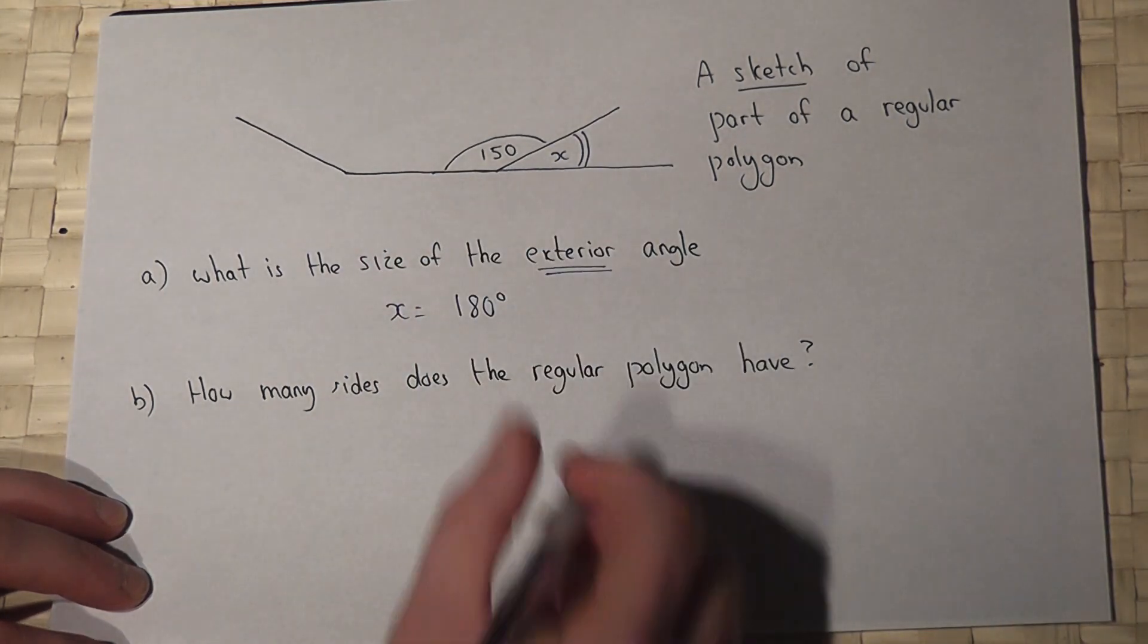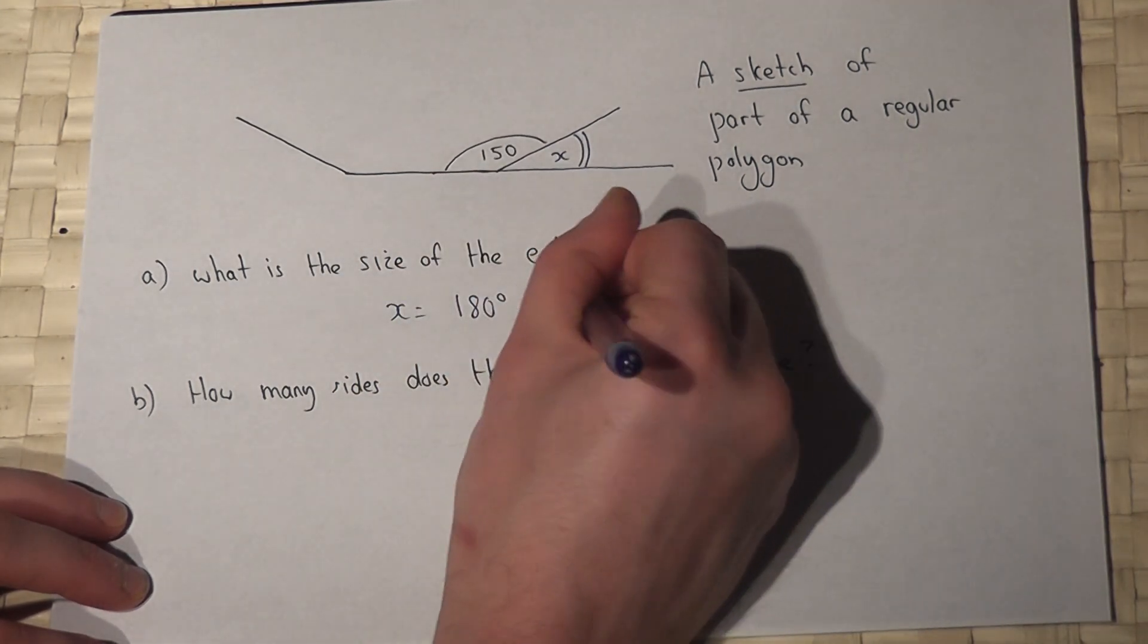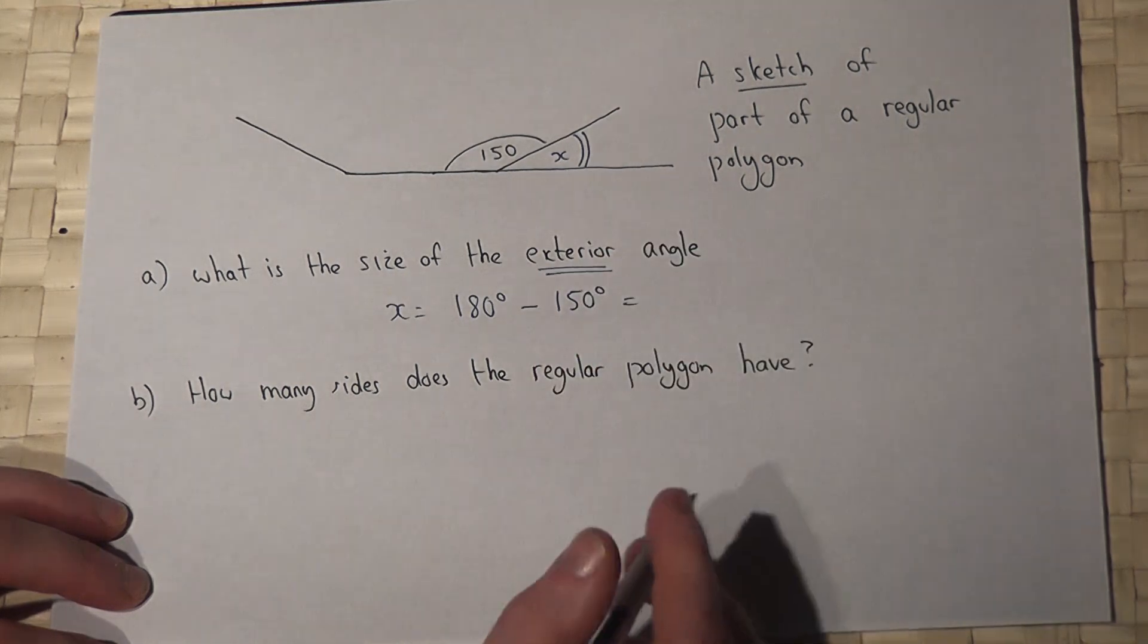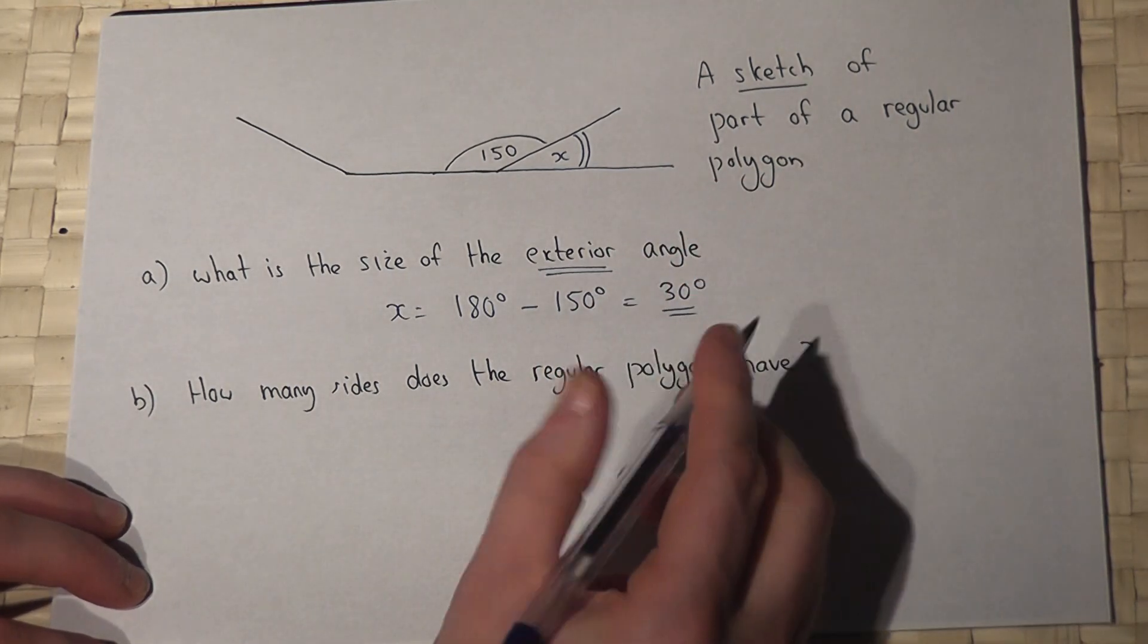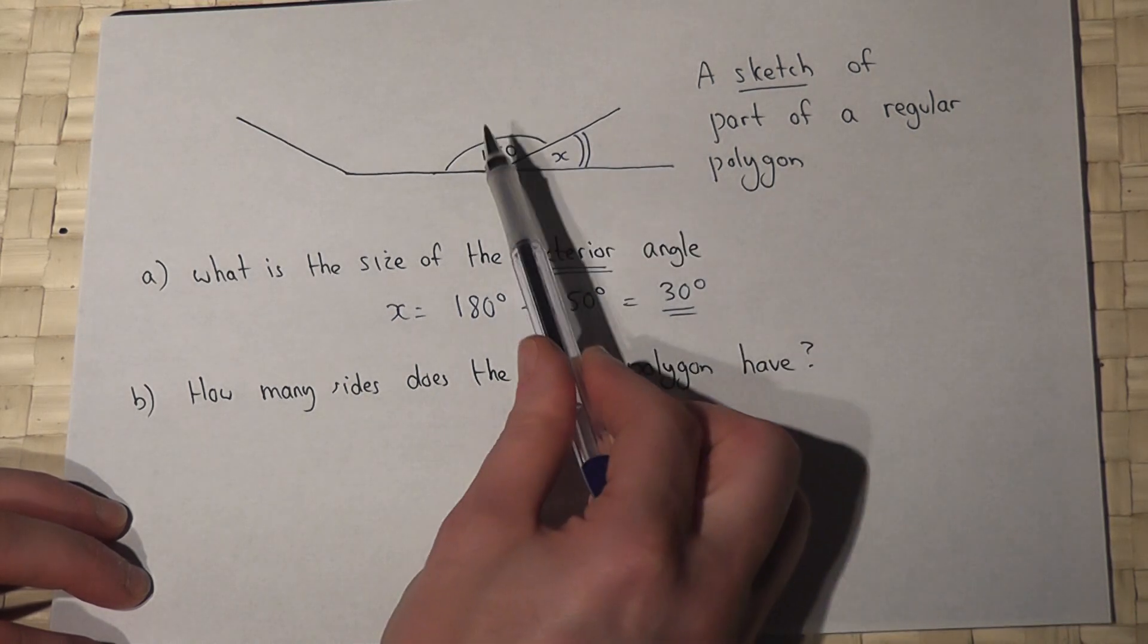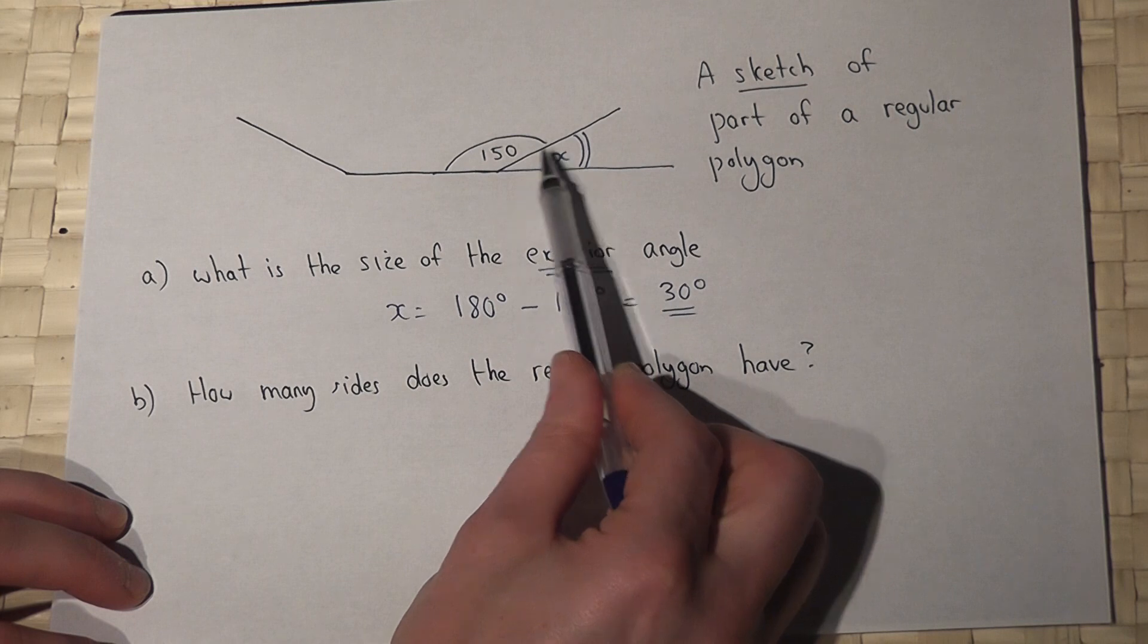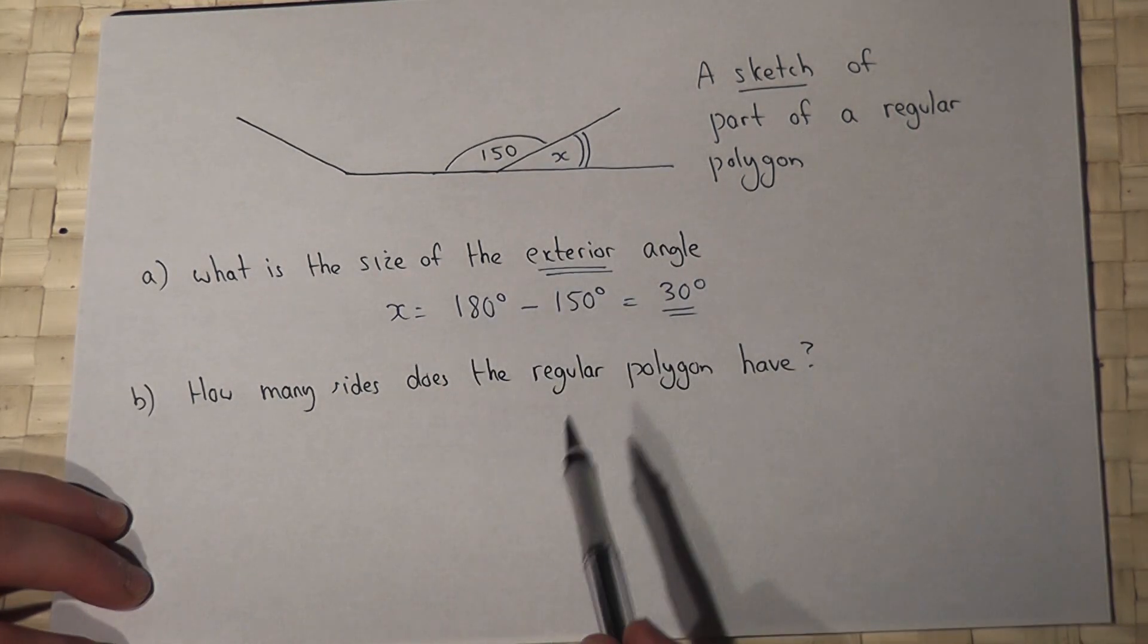Therefore it equals 30 degrees. That's a key fact: if we have a polygon, the exterior plus the interior always adds to 180 degrees.